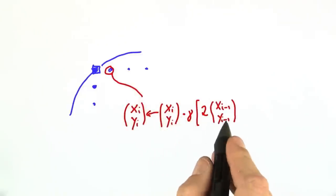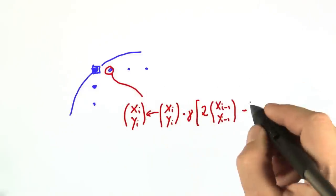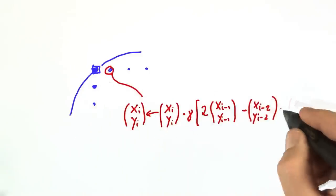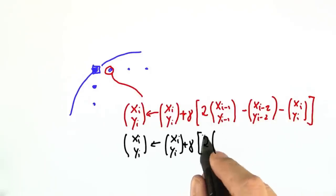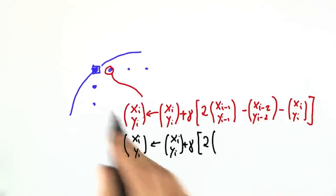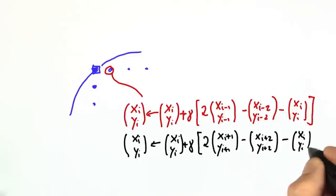Two times the previous guy. And of course, it's cyclic, so you have to make sure this is really cyclic. Minus the guy two steps away and minus our own node. Why this makes sense, we see when we go into the opposite direction. Here we add a small gamma two times this guy over here, minus this guy here, minus our original data point.